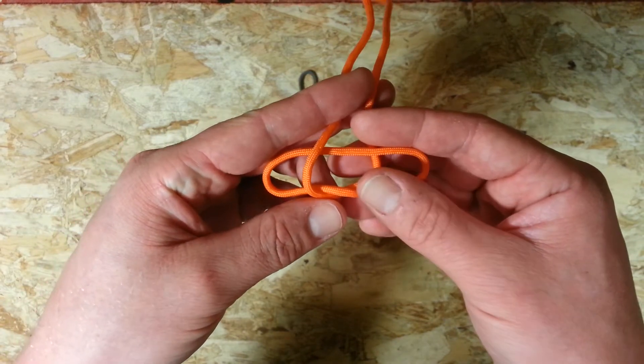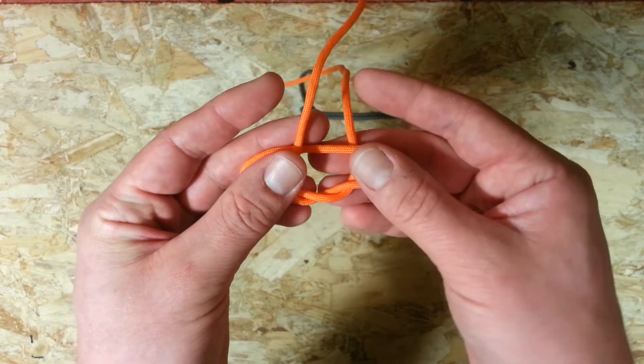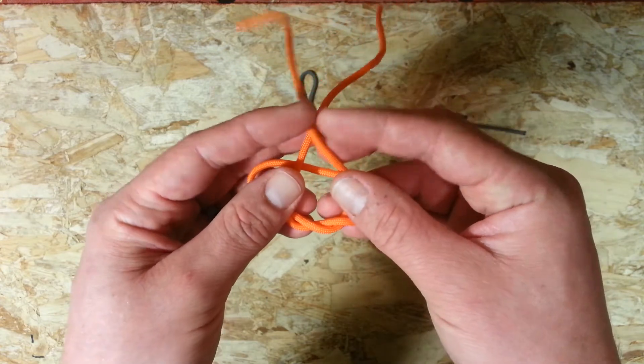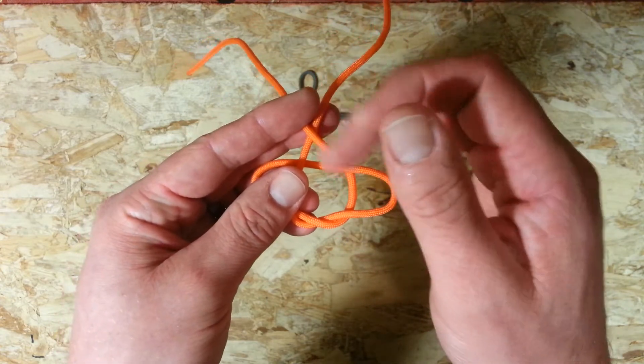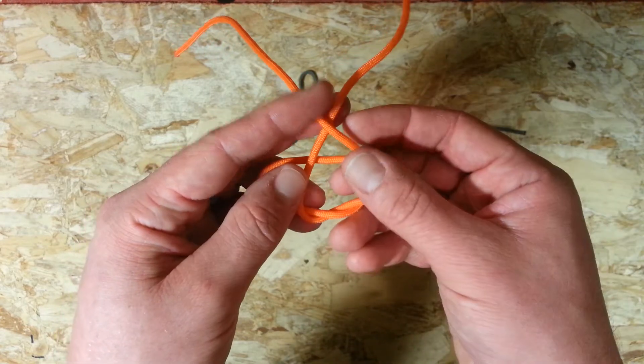So once we're up at the top here we're just going to cross these over. So you're going to take your one in front and go behind the other cord. So the one on the right is going over the top, the one on the left that came up in front is going behind. So cross those over.